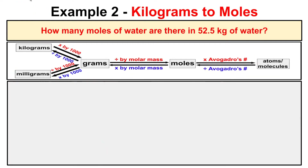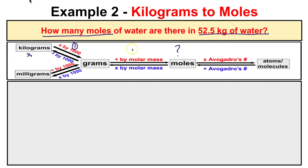This problem says: how many moles of water are there in 52.5 kilograms? We want to know the number of moles when we have 52.5 kilograms of water. Looking at our diagram, this is going to be a two-step problem. The first thing we do is convert kilograms to grams, and then we convert those grams to moles.